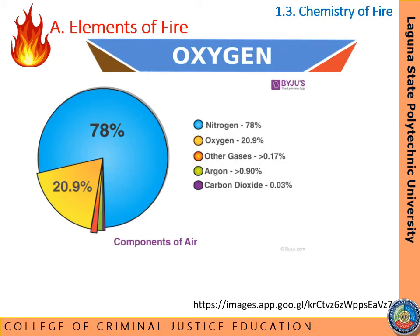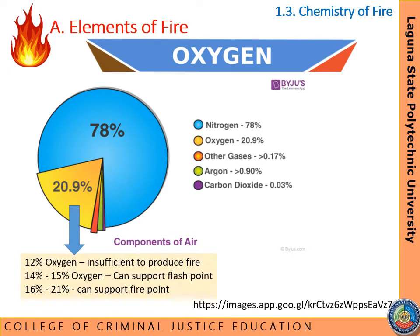The last element of fire is oxygen. Oxygen in air is the common oxidizing agent that combines with fuel vapor. In the components of air: nitrogen is 78%, oxygen is 20.9% (rounded to 21% in some sources), and 1% consists of inert or other gases such as argon or carbon dioxide. Take note: 12% oxygen is insufficient to produce fire; at 14–15% oxygen it can support flash point; and at 16–21% it can support fire point.